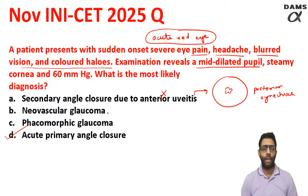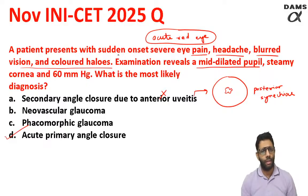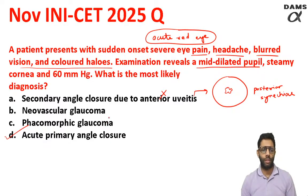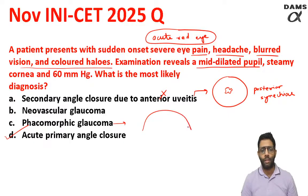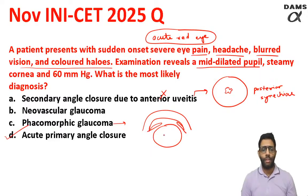In neovascular glaucoma, abnormal vessels are seen in the iris, which can also lead to very high pressure and severe eye pain. Whenever there is high pressure, there is an acute red eye with steamy cornea, as aqueous can imbibe into the cornea. It can happen in phacomorphic glaucoma, but they have to tell you extra things — like a diabetic patient with neovascular glaucoma, or central retinal vein occlusion with rubeosis iridis. In phacomorphic, they must tell you the patient has an intumescent cataract — a swollen lens pushing the iris causing shallow anterior chamber. Since swollen lens, rubeosis, and small constricted pupil are not given, the answer is acute primary angle closure glaucoma.